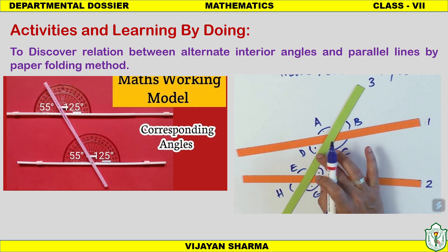In the lines and angles chapter, using two protractors we can calculate corresponding angles, alternate angles, exterior angles, and interior angles between two parallel lines. This is a very important activity for teaching students about a transversal cutting two parallel lines and measuring the angles in degrees.